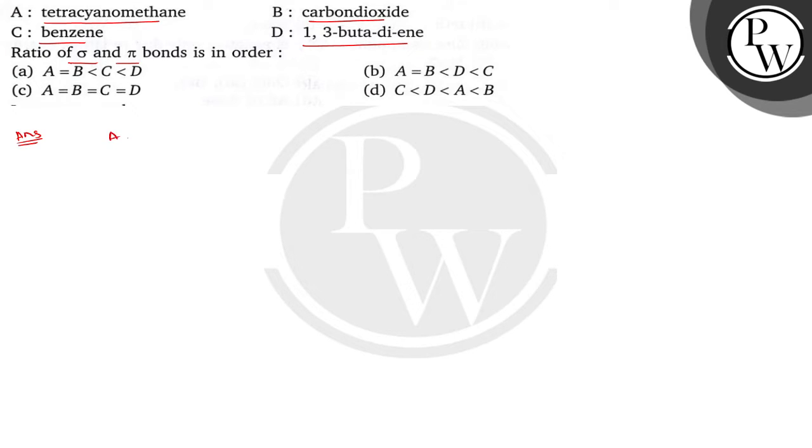Bachyo, in case of A, it is tetracyanomethane. So this is the structure. Let's calculate the number of sigma bond and pi bond here. So here sigma bond is 1, 2, 3, 4, 5, 6, 7 and 8. And number of pi bonds are 1, 2, 3, 4, 5, 6, 7 and 8. So the ratio of the sigma and pi bond is 1 is to 1.